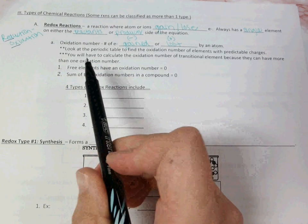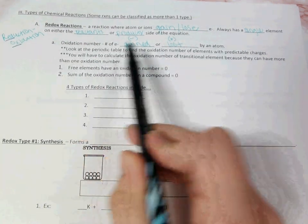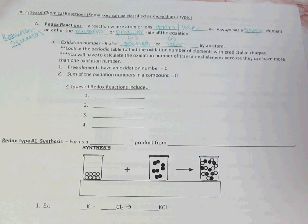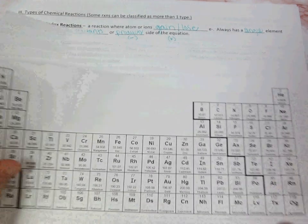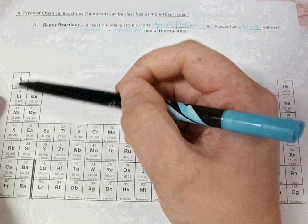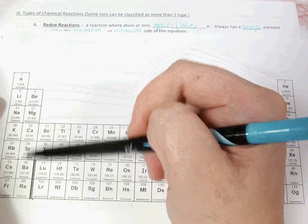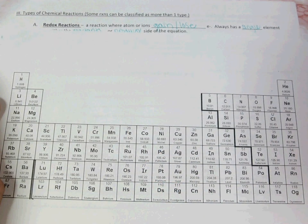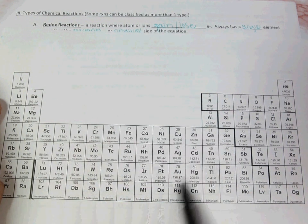When you have a transition metal, look at the periodic table to find the oxidation number of elements with predictable charges. On our periodic tables, the elements that you're able to label oxidation numbers for are group 1, group 2, group 13, 14, 15, 16, and 17. Group 18 doesn't have oxidation numbers because they don't gain or lose electrons. We skip over our transition metals.